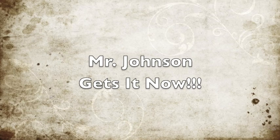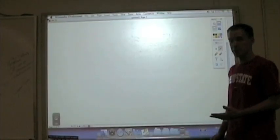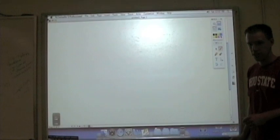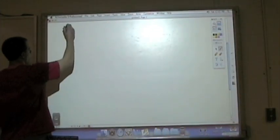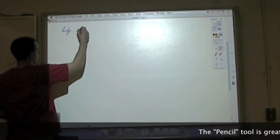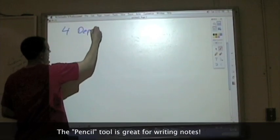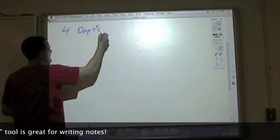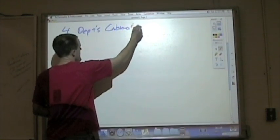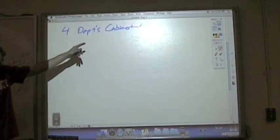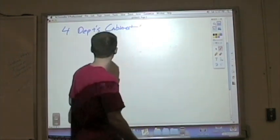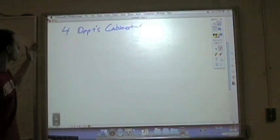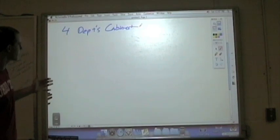How does it work? Using the Promethean board is very simple. I'll demonstrate using this content we've been going over already. You'll notice I've got this pencil here — that comes from over here, and here, and here. This program is called Active Studio 3 Professional. It's very easy to use, very user-friendly.